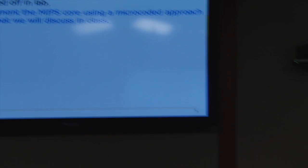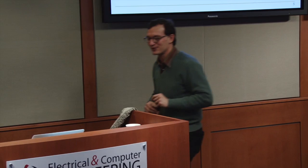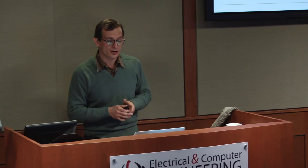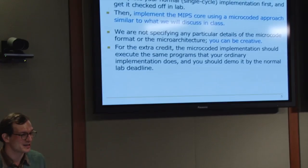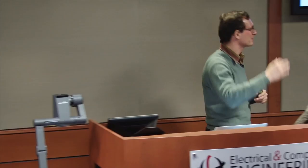Lab assignment 2 is a single-cycle implementation of the MIPS ISA, or the subset you're implementing. In the extra credit portion, we're asking that you do a microcoded implementation of the MIPS ISA, similar to what we will discuss in class. We're not going to specify any particular details — so you can be creative. A microcode implementation should execute the same programs as your ordinary implementation does. You should demo it by the normal lab deadline. You can get an additional 4% on top of the course grade, so you'll go up to 104% if you do everything perfectly.